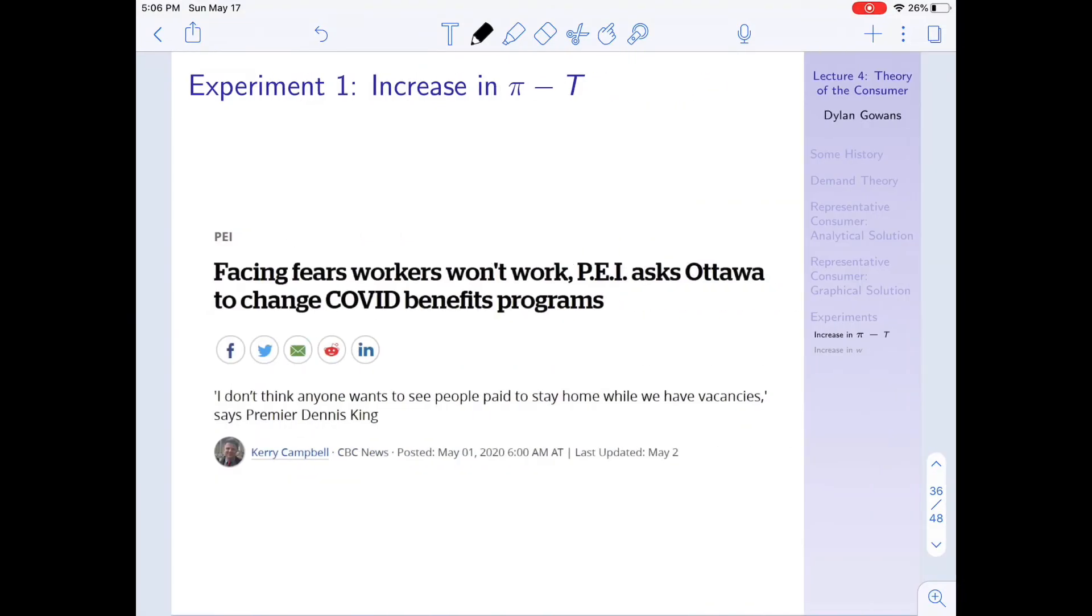And so here I have just one headline, this is from the CBC. I saw another similar one in the Wall Street Journal this morning. But this is from PEI. It says, facing fears workers won't work, PEI asks Ottawa to change COVID benefit programs. And the quote from the premier of PEI says, I don't think anyone wants to see people paid to stay home while we have vacancies. So you can see that this is kind of that same implication. The implication is we increase the non-wage income of people, so why would they work?